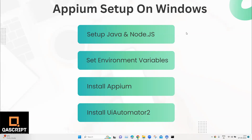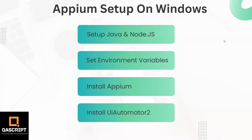Moving on to our next topic on mobile automation with Appium, we are going to look at how we can set up Appium on our Windows machine. As part of the setup, we are going to set up Java and Node.js, set the environment variables for the Java home directory, use NPM to install Appium, and also install an Appium driver for Android applications, which is the UI Automator tool.